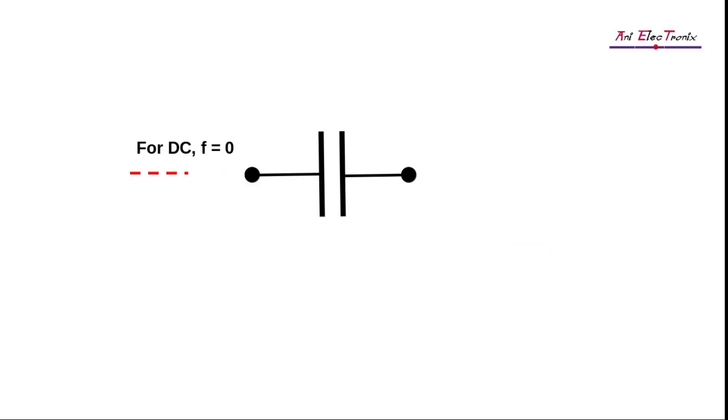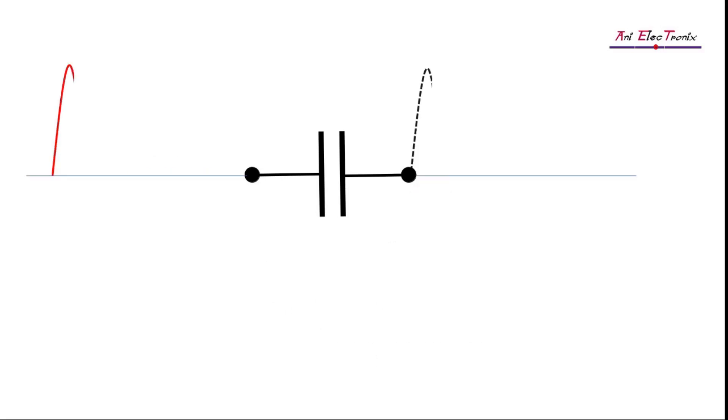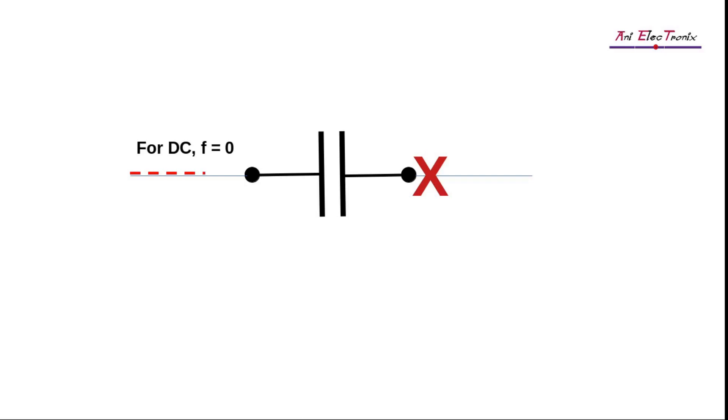The frequency value of DC component is zero, and based on the capacitive reactance formula we can conclude DC cannot pass through a capacitor since the capacitive reactance becomes too high under realistic conditions. Hence we get a component that passes the AC component, but resists the DC movement.